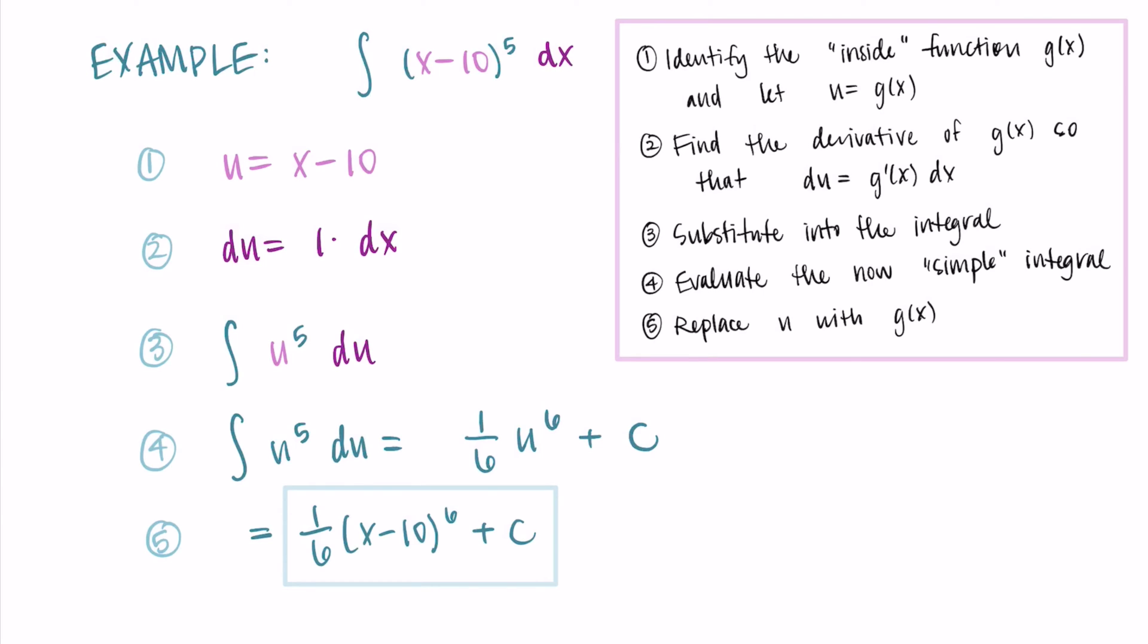Now something that's just a good practice is when you get your final solution, just really quickly look at it and think, okay, what's the derivative of this? So you should see pretty quickly that that six comes in front and cancels with the one-sixth, and then the power decreases by one to five, and you're getting that (x-10)^5 that we started with. So it's just good to check really quick and make sure that you're getting what you expected.